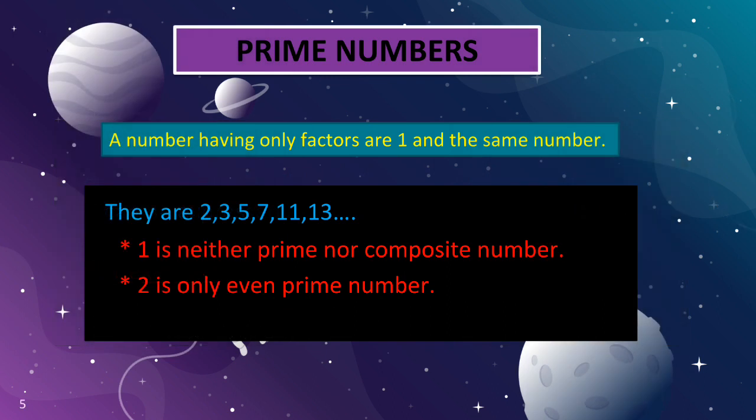Next, prime numbers. A number having only factors 1 and the same number is called a prime number. Examples are 2, 3, 5, 7, 11, 13, 17, 19, etc. Note that 1 is neither prime nor composite. Also, 2 is the only even prime number; except 2, all prime numbers are odd numbers.